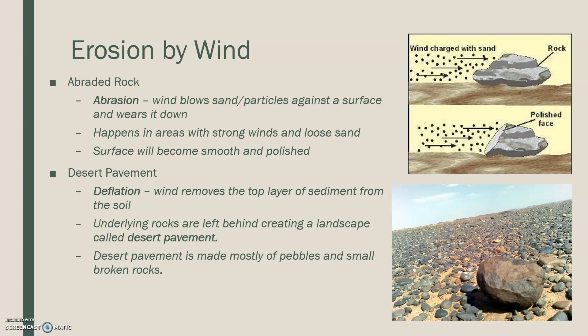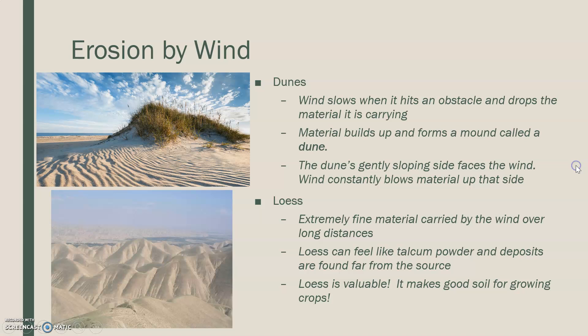Those underlying rocks create a landscape known as desert pavement, which basically looks like the picture here — mostly small pebbles and small broken-up rocks, most of them about the same size. In deserts, we also have what's known as dunes.